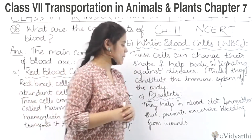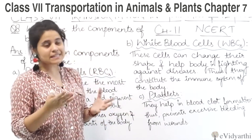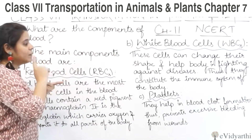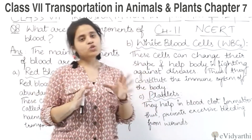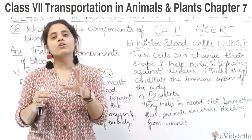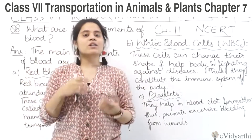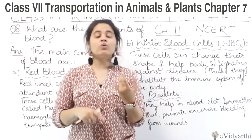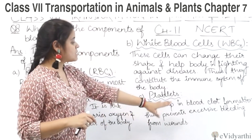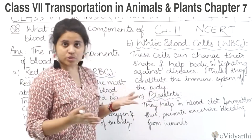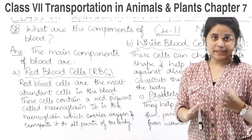Then the next one is platelets. Platelets ke baare me humne notes me bhi discuss kiya hai. They help in blood clot formation. Blood ki jo clotting hoti hai, usme agar aapki platelets kam hon toh blood clotting nahi ho paati. Blood clotting bohot zaroori hai, because agar koi injury hoti hai aur blood clot nahi hoga, toh excessive blood loss ho sakta hai. And thus it prevents excessive bleeding from wounds.